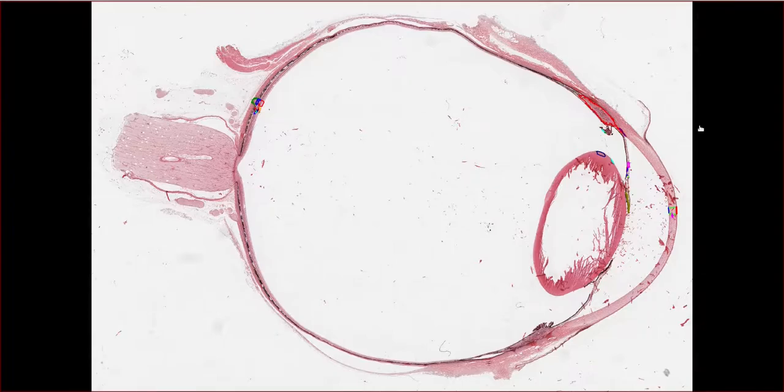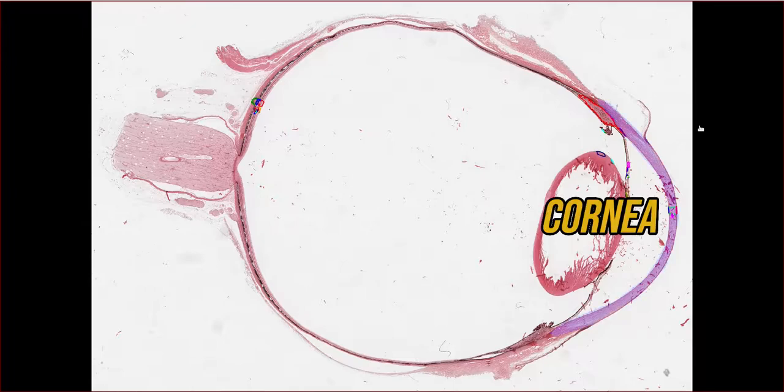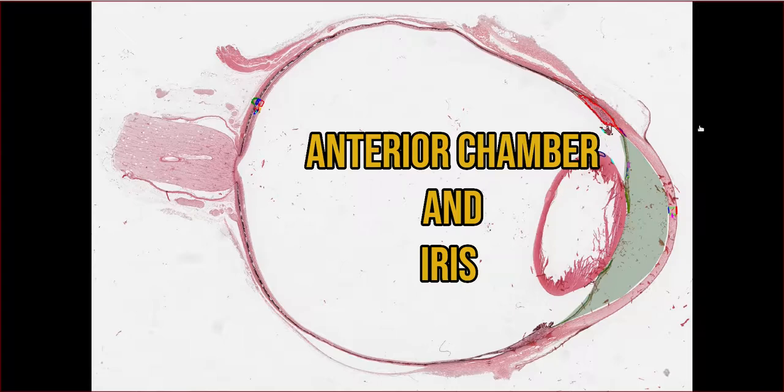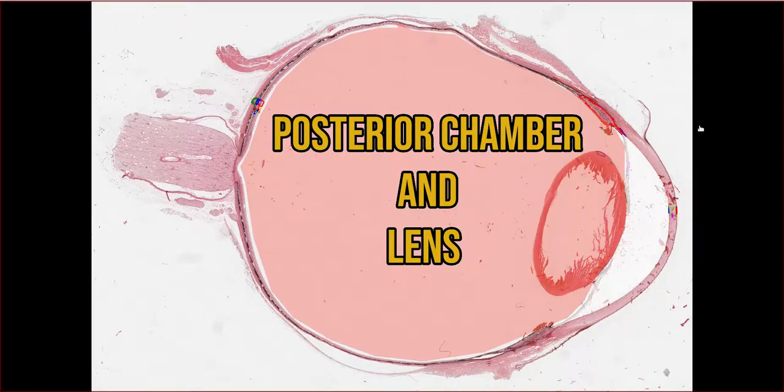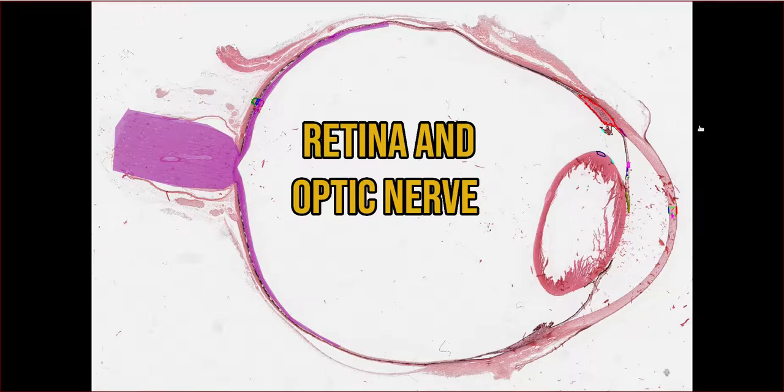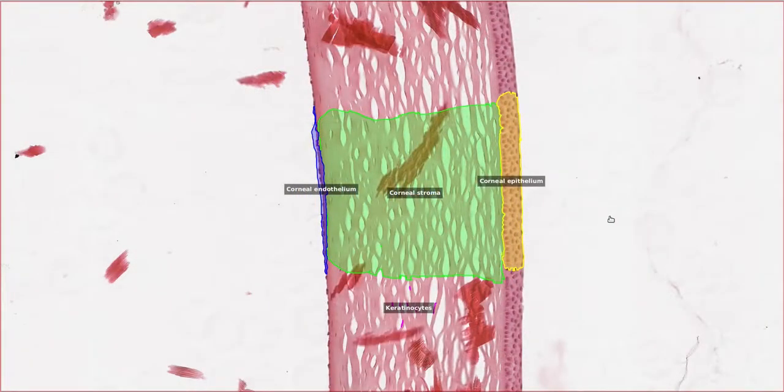The eye is quite a complex structure, so let's break it down into a few compartments, starting with the cornea, moving on to the anterior chamber and iris, the posterior chamber and lens, and finally the retina and optic nerve. Let's start with the cornea.